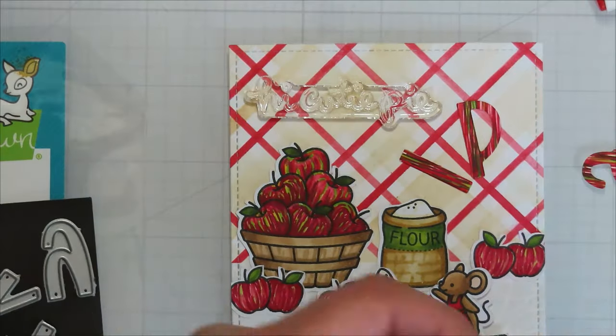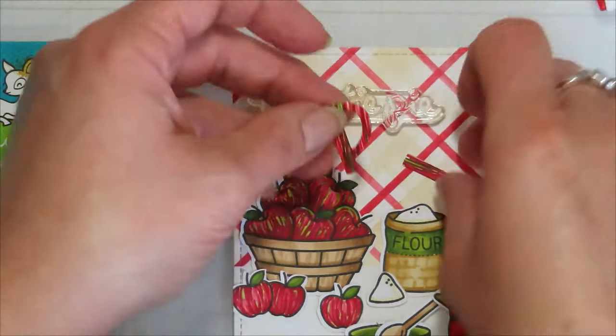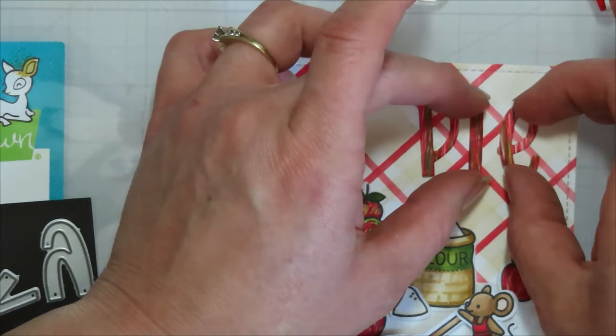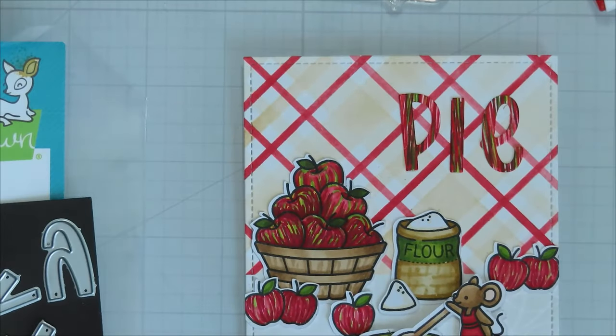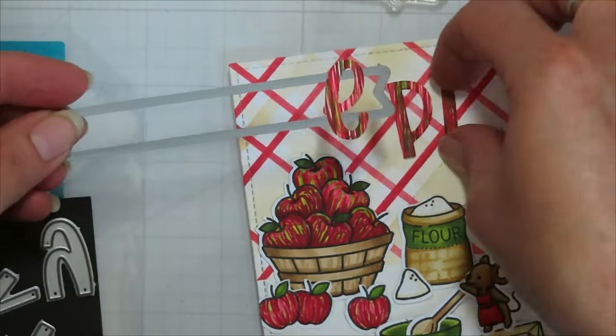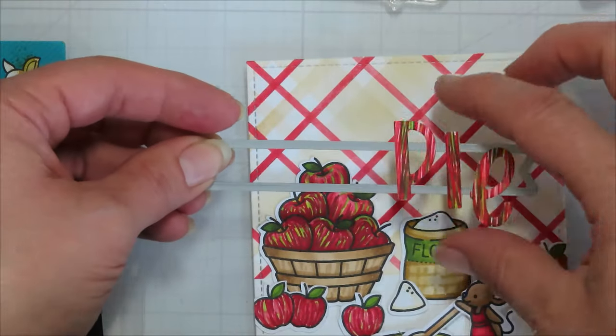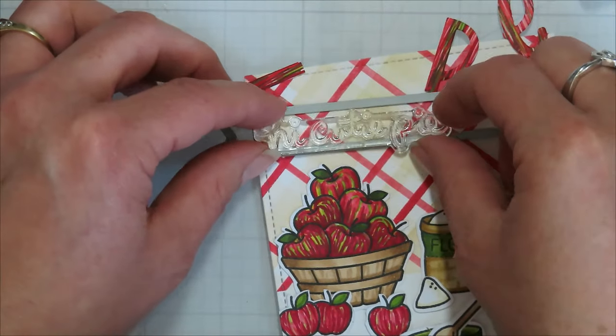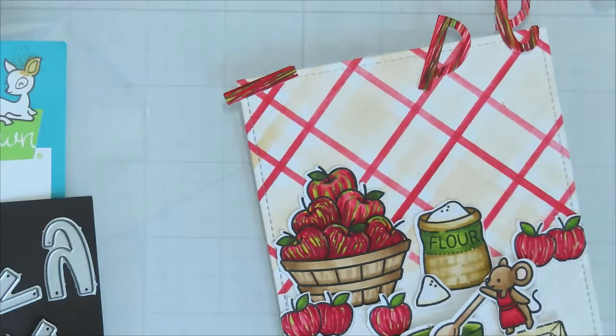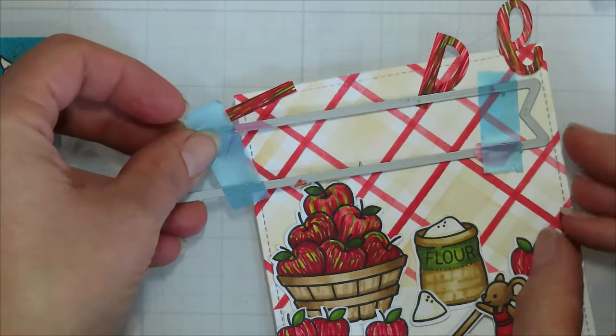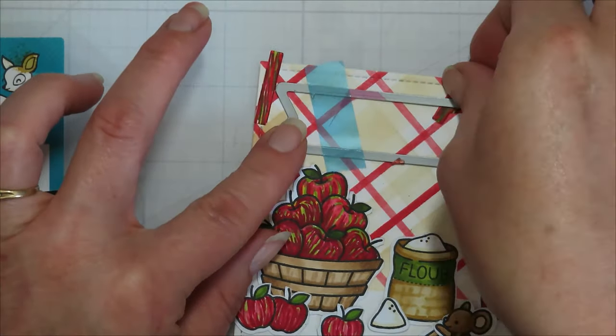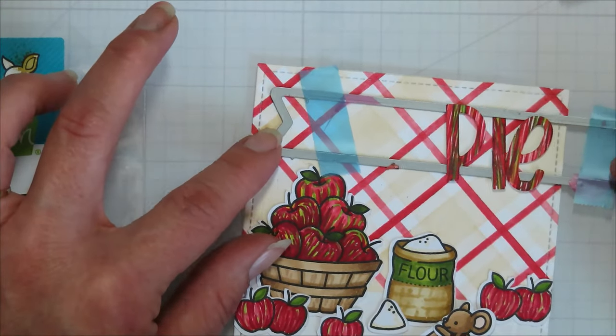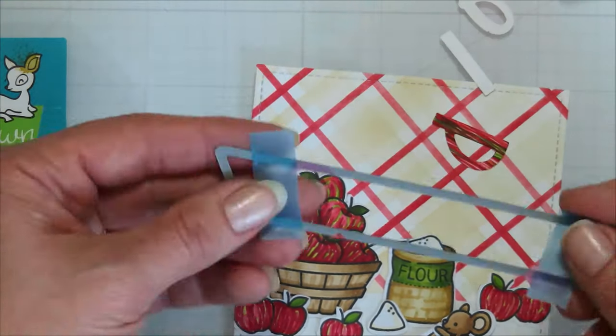I'm using the Baked with Love for the flower, the bowl, I think the spoon and the butter. And then A Creature Was Stirring for the little mouse in the apron. And then of course, I already said I was using the Thanks a Bushel stamp set for my bushel basket of apples, and then the Simply Celebrate Fall for the individual and sets of two apples on my card.